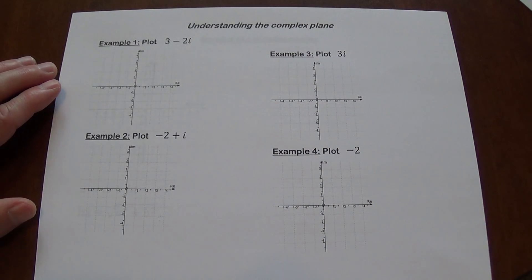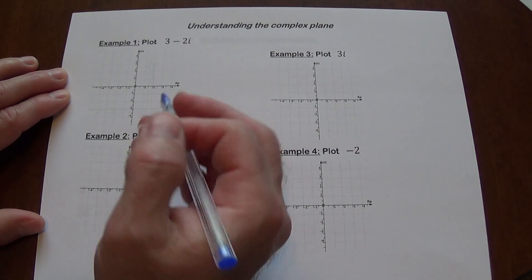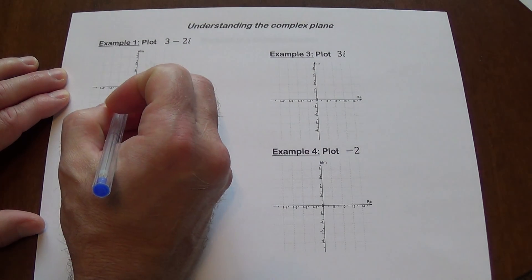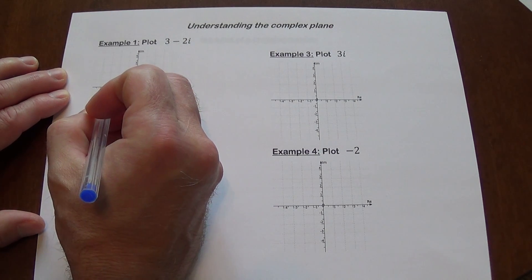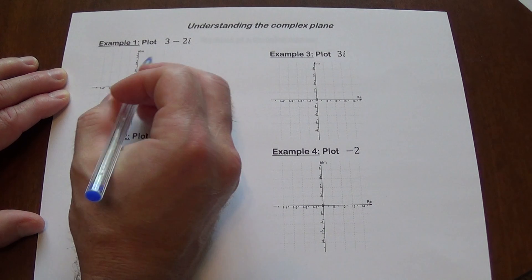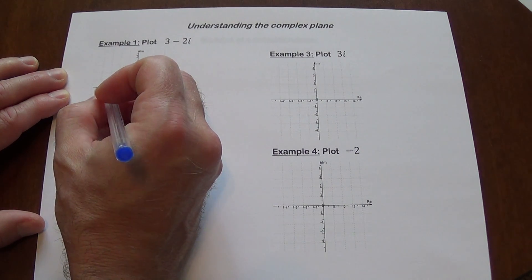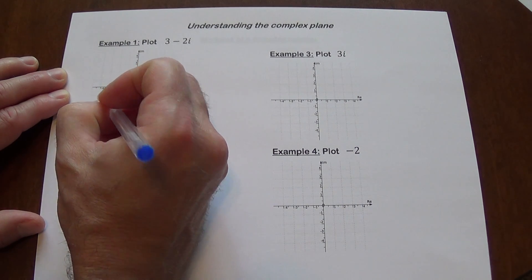Let's plot 3 minus 2i. So the real part is 3, which is going to be on the horizontal axis, and then minus 2i, so I'm going to go down. That's the number.